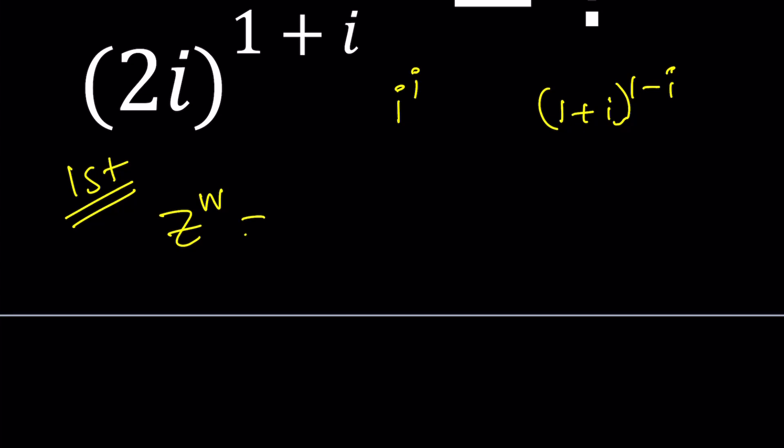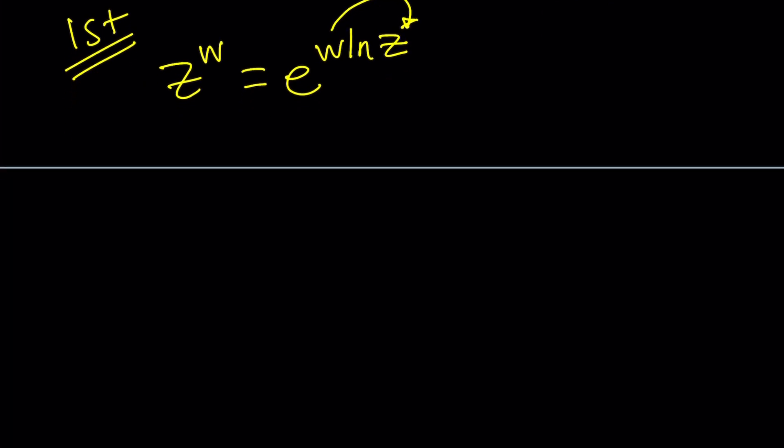So we're going to use the exponential function. z to w can be written as e to the power w ln z. Make sense? This is kind of like if you bring the exponent back here and use the definition of e to the ln x equals x, you should get the same thing. So let's apply this property to two numbers because we have 1 plus i to the 2i and 2i to the power 1 plus i.